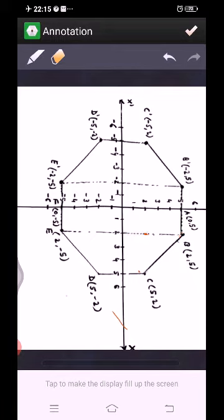We have to reflect B, C, D, E in the y-axis and write their coordinates. So you see B reflected in y-axis means the sign of the x-coordinate will change.